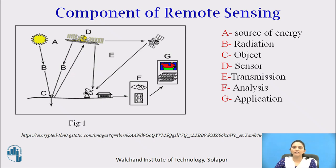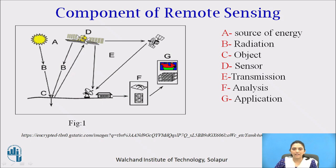Now we will see the components of remote sensing. This image, taken from the internet, nicely explains the entire process. The sun is the main source of energy. Sun rays fall on the object — here the object is the surface of the Earth — and the reflected rays are captured by the sensor of a satellite, which then captures the image.